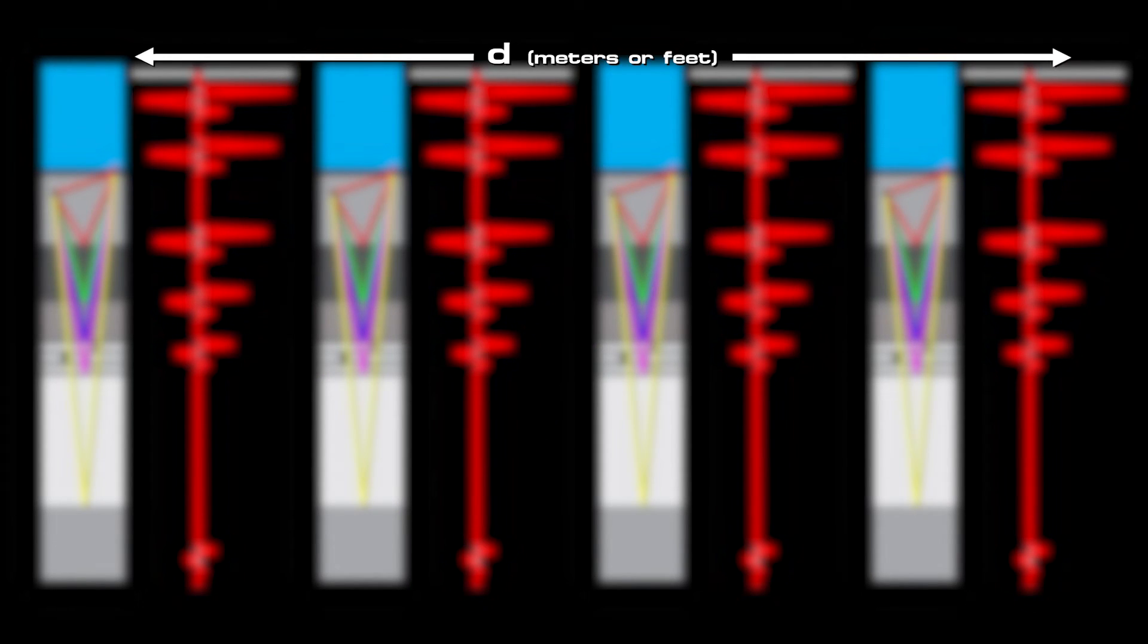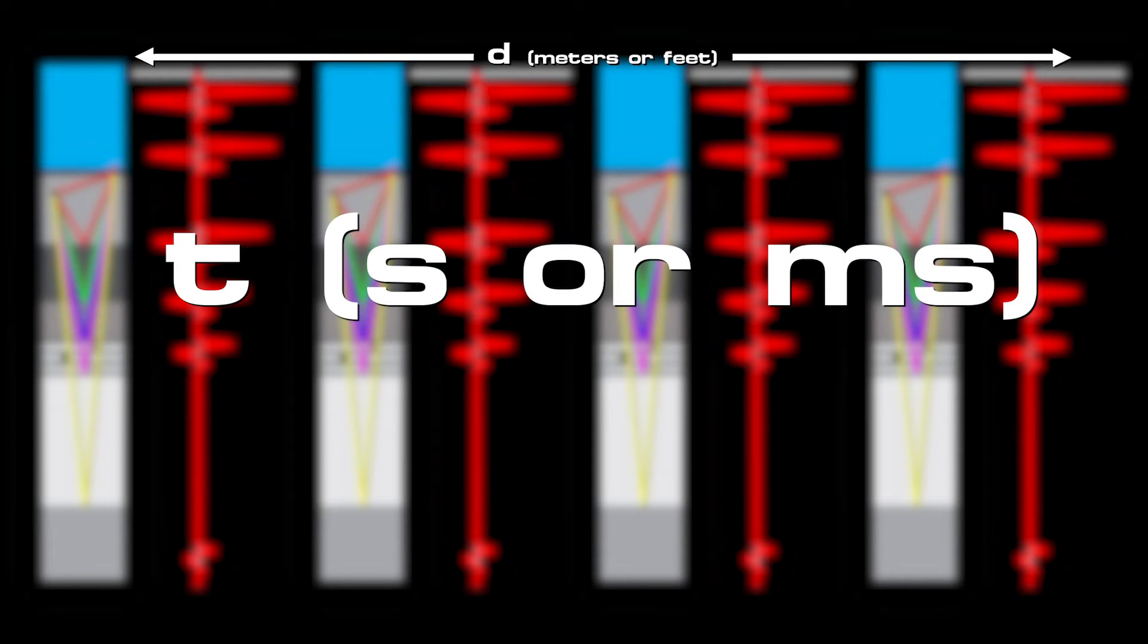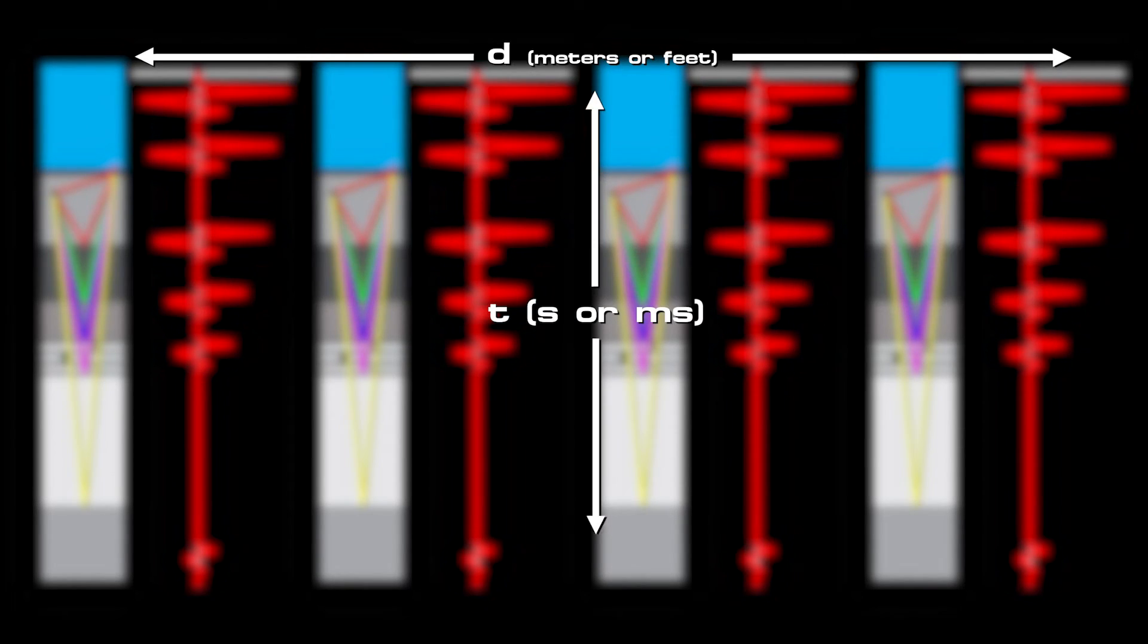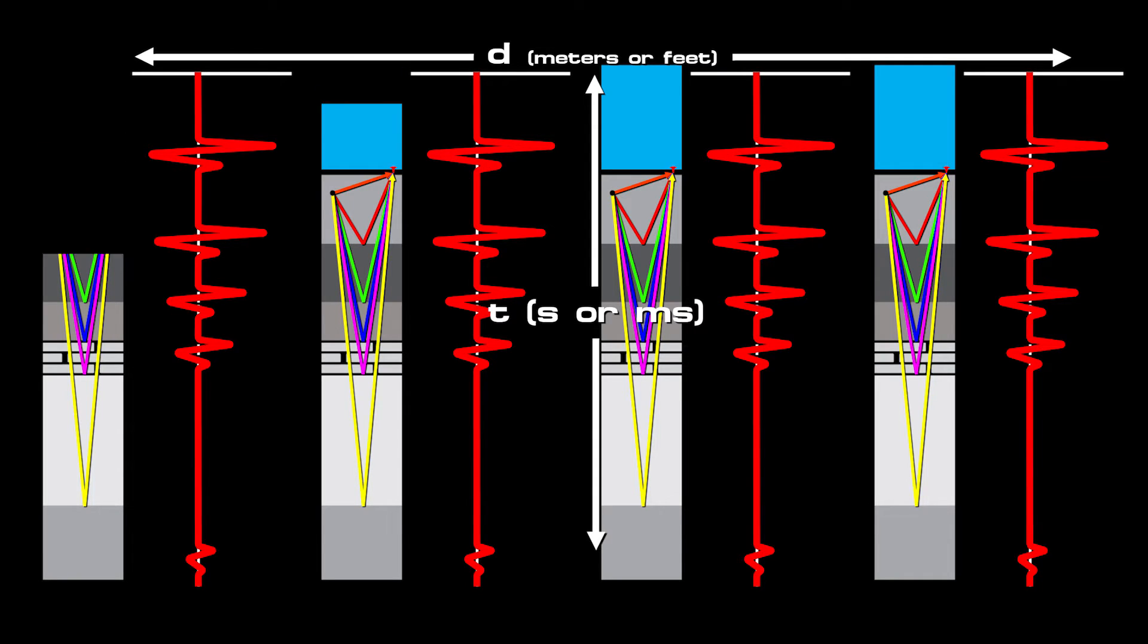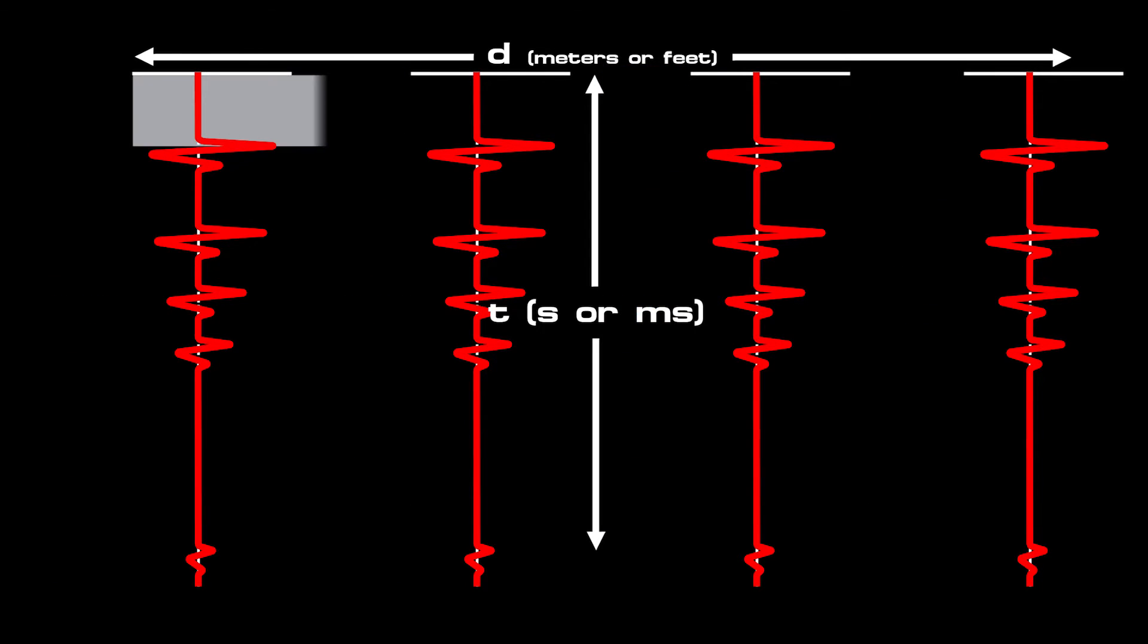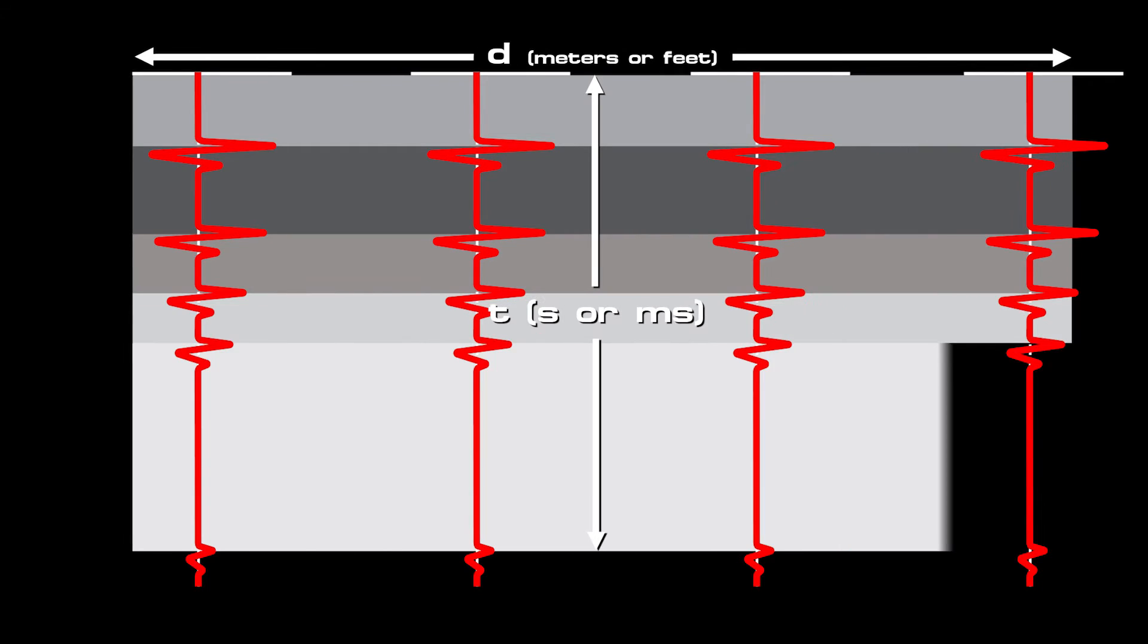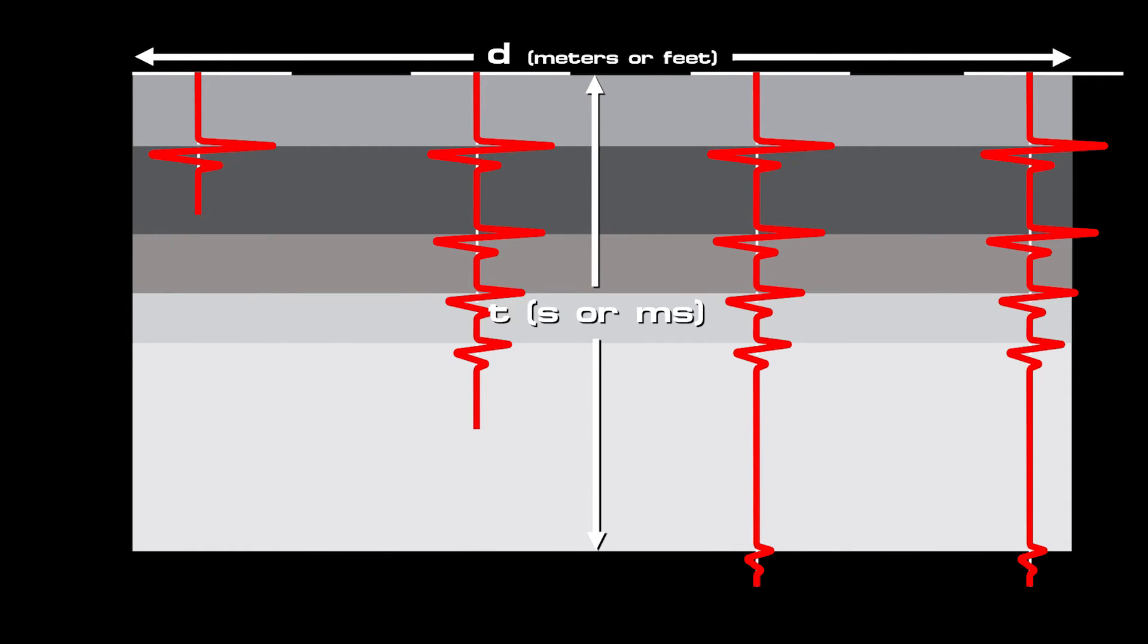Its vertical scale, however, is in time, in seconds or milliseconds, depending on the depth. We mute the first break, because in this case it tells us nothing about the reflections. We can now interpret a geological section in time from the seismic data, noting again the reflected waves have traveled two ways, from source to reflector and back.